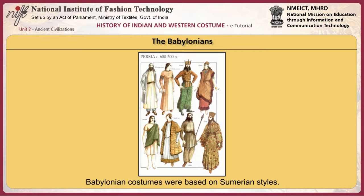A notable introduction was a cut and sewn short-sleeved tunic extending to the knees. Ankle-length versions were worn by men and women of high rank. These were functional and easy to construct. The Sumerian fringe decoration continued in this period. Greater skill in textile weaving was achieved, as was ornamentation through embroidery.